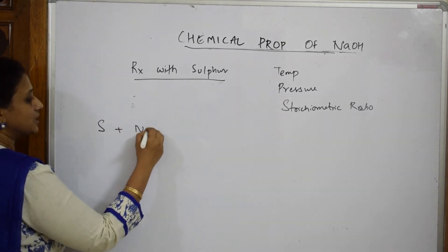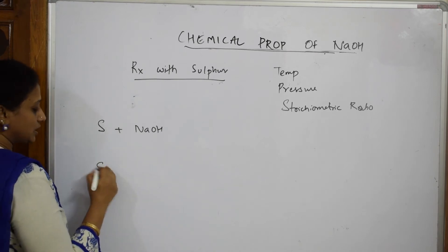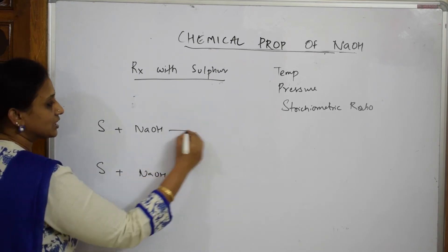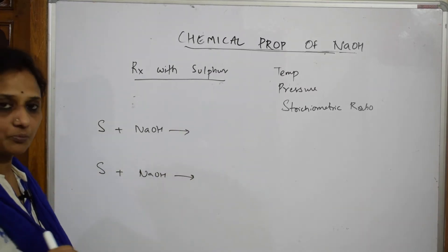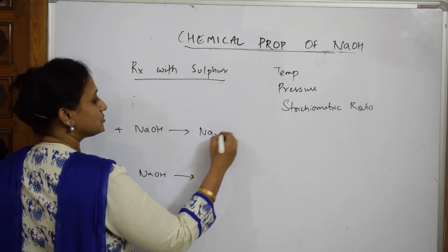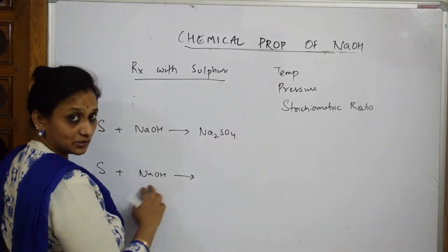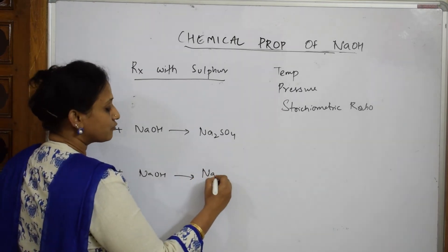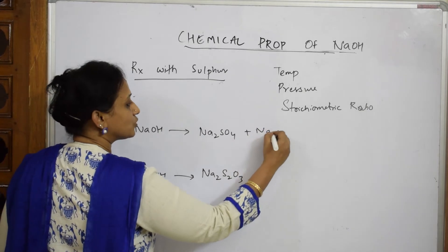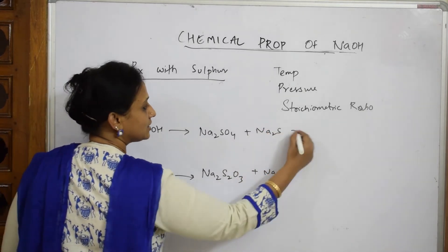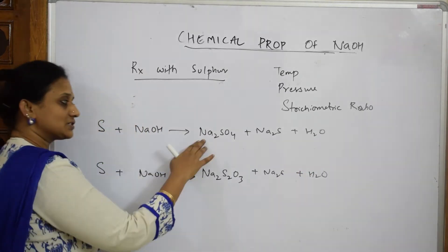When sulfur reacts with sodium hydroxide, taking different moles gives different products. Three important products are formed: first, sodium sulfate (Na₂SO₄). When I change the number of moles, the product formed is Na₂S₂O₃ (sodium thiosulfate), and the leftover is sodium sulfide (Na₂S), along with water molecules in both cases.